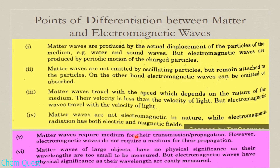Matter waves require a medium for their transmission and propagation — for example, water waves require the ocean as a medium. However, electromagnetic waves do not require a medium for their propagation. This is why the sun's electromagnetic radiation can travel through space, where there is no medium of propagation.